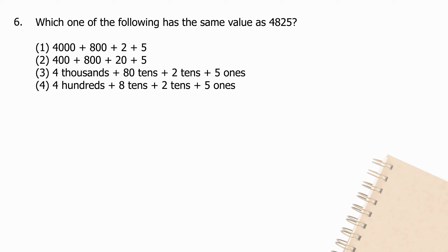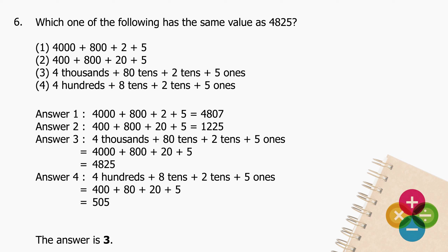Question 6: Which one of the following has the same value as 4825? Answer 1: 4000 + 800 + 2 + 5 = 4807. Answer 2: 400 + 800 + 20 + 5 = 1225. Answer 3: 4000 + 800 + 20 + 5 = 4825. Answer 4: 400 + 80 + 20 + 5 = 505. The answer is 3.